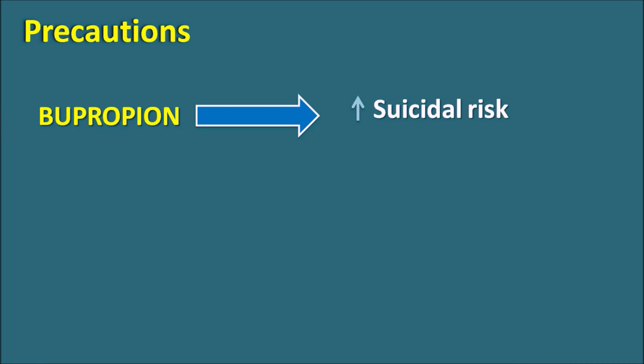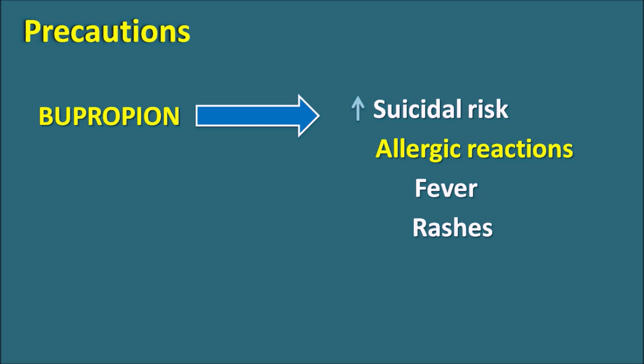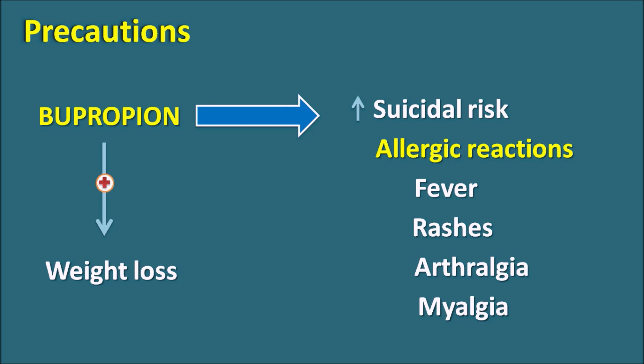Another important precaution is that bupropion can increase suicidal risk, so treatment must be carefully monitored. It can also produce delayed hypersensitivity reactions including fever, skin rashes, and painful conditions such as arthralgia and myalgia — joint and muscle pains. Any hypersensitivity reactions should be thoroughly checked before prescribing. Bupropion can also increase weight loss and agitation in patients.